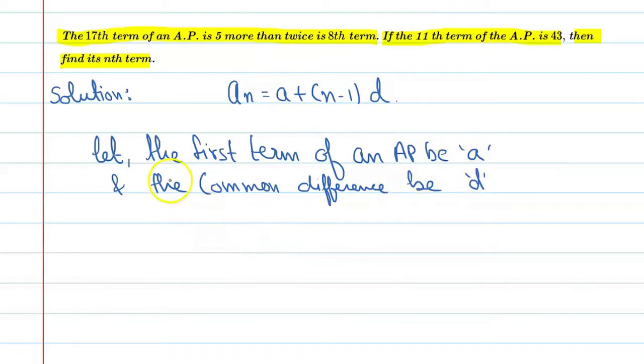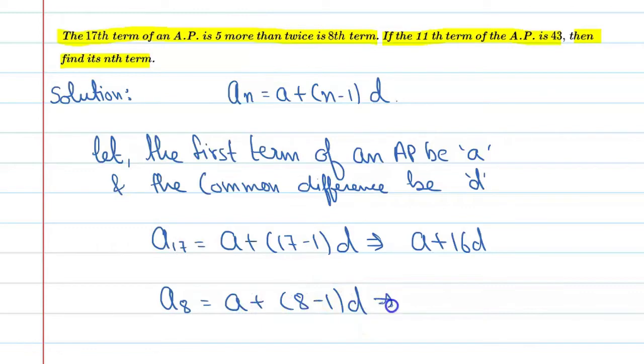We can say that A17 is equal to A plus 17 minus 1 into D, which means A plus 16D. And A8, A8 is equal to A plus 8 minus 1 into D, which means A plus 7D.